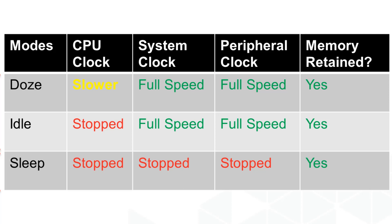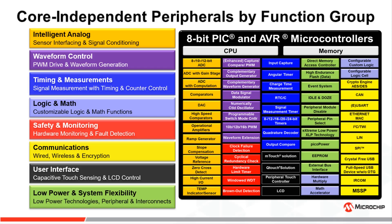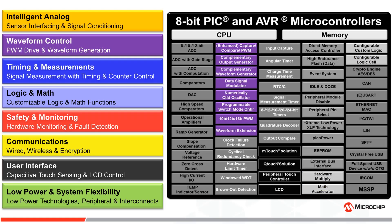Idle mode is where the CPU clock is completely halted but the peripheral and system clocks are still functioning at full speed — Idle mode is like Doze mode on steroids. Technically, Idle mode is a special case of Doze mode with a ratio of 1 to infinity. All your peripherals will still work in both of these modes. Do you need to output a PWM, change the duty cycle, or use system comms like I²C and SPI?